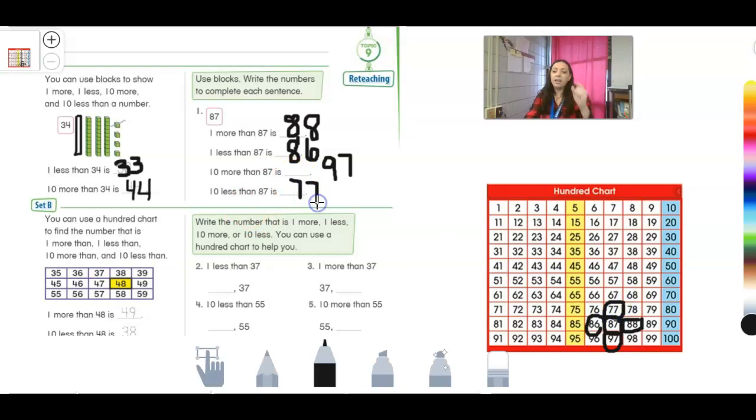Remember I'm going to move up on the number chart and it would be 77. Or I could just think, okay, 87 is eight tens and seven ones. If I take one of those tens away, I would have seven tens and seven ones. And the seven tens and seven ones is the number 77. And then it just showed us that you can use a number chart to help you find what's one more, one less, 10 more, 10 less. We just talked about that.